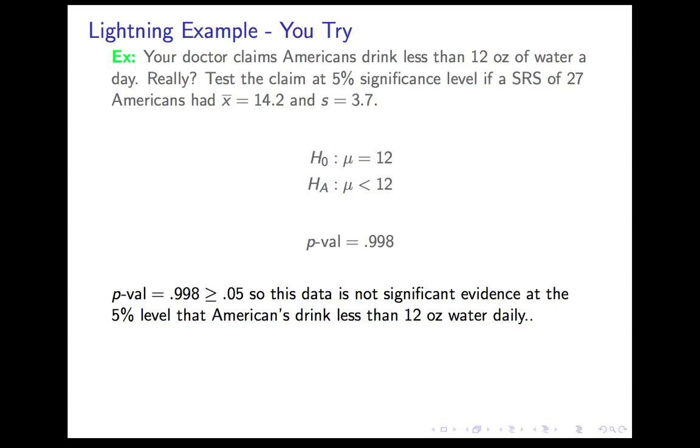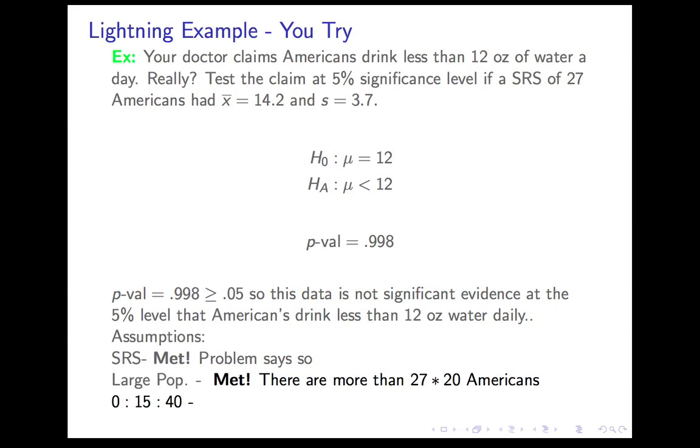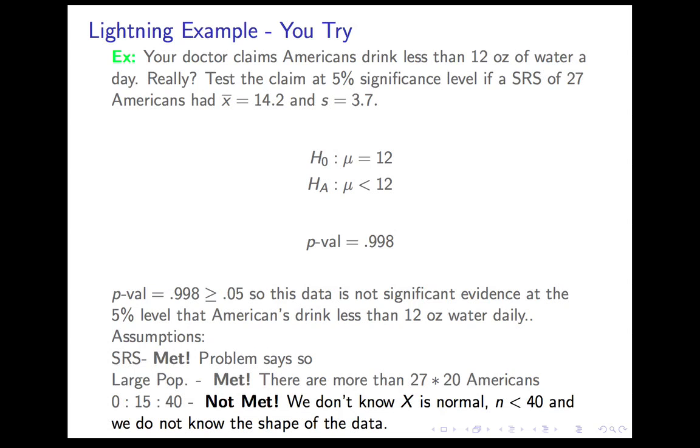The fact that the sample is arguing in the opposite direction from what you're looking for evidence for explains why the p-value is enormous. Typically, we get p-values that are quite small. Okay, let's check the assumptions real quick. It says a simple random sample, so that's met. There are more than 540 Americans, so that's met. n equals 27. Not met. We don't know that X is normal. n is less than 40, and we don't know the shape of the data. Really important point here. If you go and look at the histogram, it will be a histogram of the previous data. Right? There's no histogram here. You can't build a histogram just knowing x̄ and s. So do not look at the histogram if you're using summary statistics. It tells you nothing.